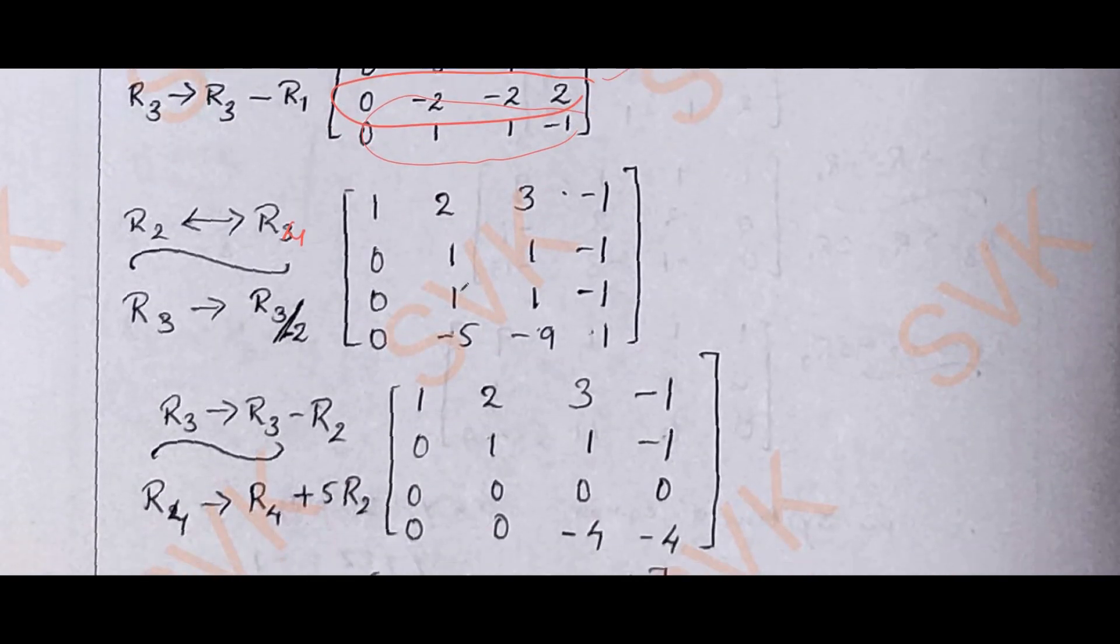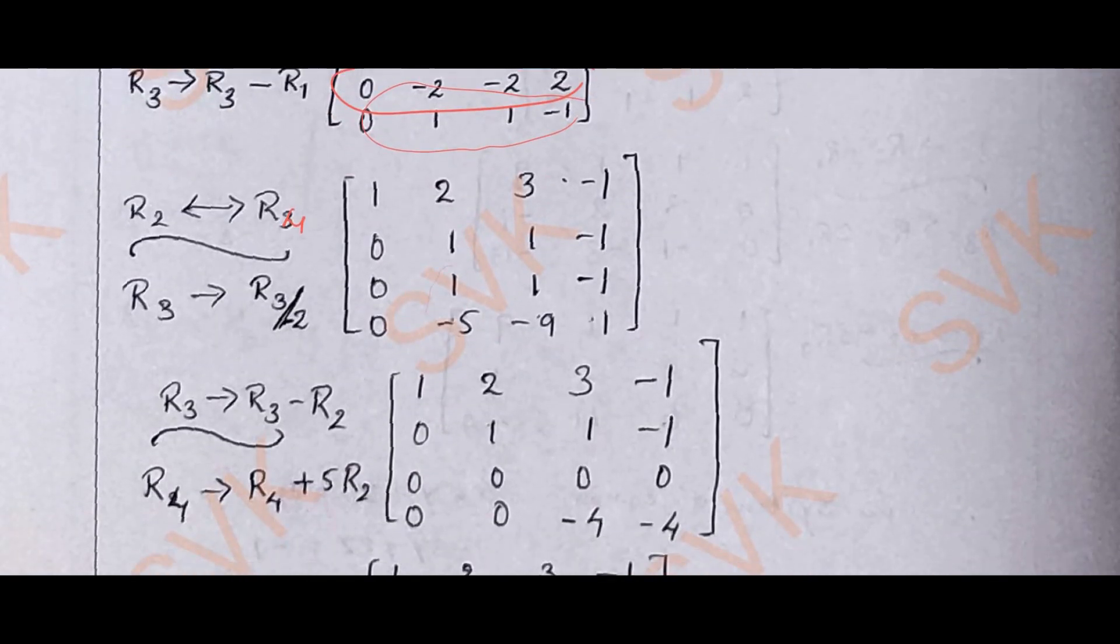Then applying a row operation for these two elements, we are going to get R3 changes with R3 minus R2 and R4 changes with R4 plus 5 times R2. I am going to get back with this matrix.